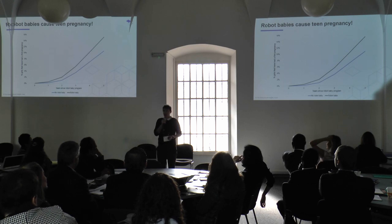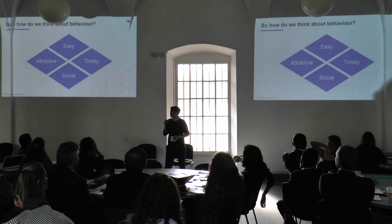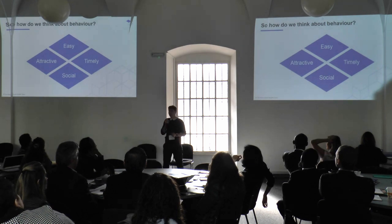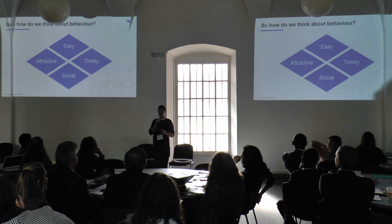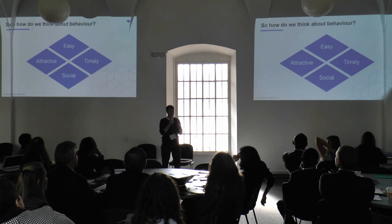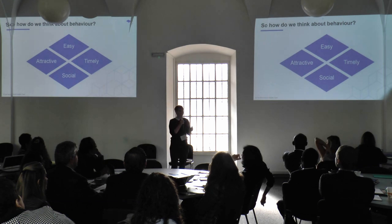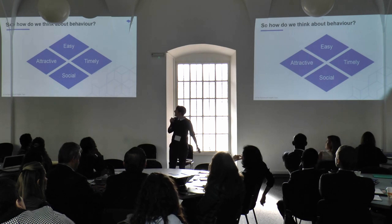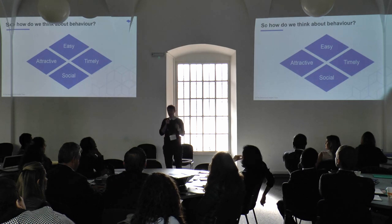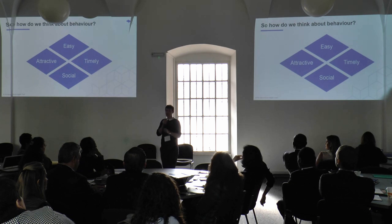When we're talking about behavioural science, we try to distil it into four really straightforward categories. There's a whole body of literature — how do we readily access it? We call this our EAST framework. If you want somebody to do something: make it easy, make it attractive, make it social, and make it timely.